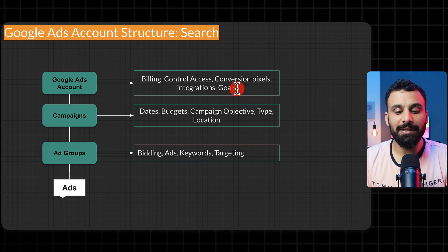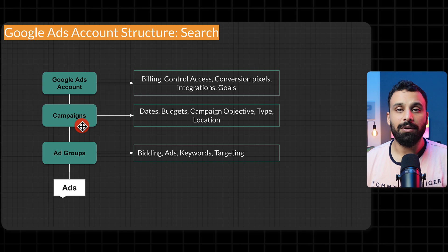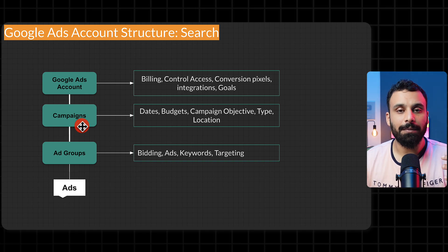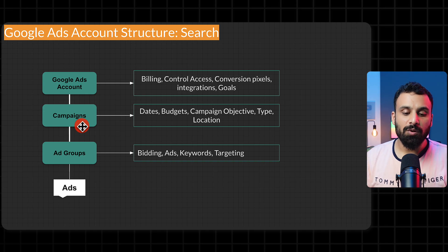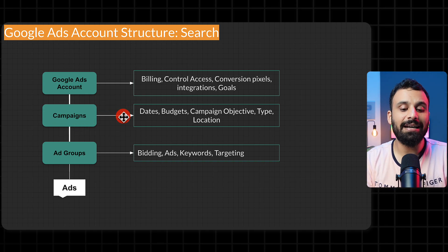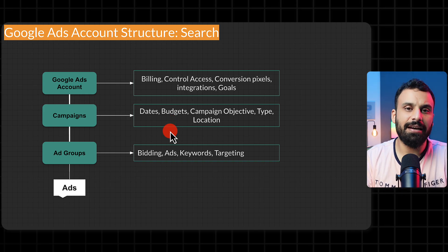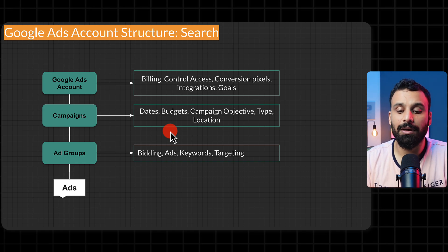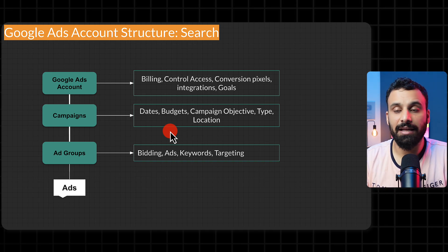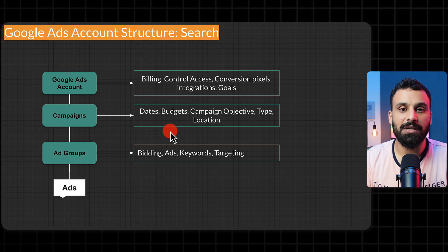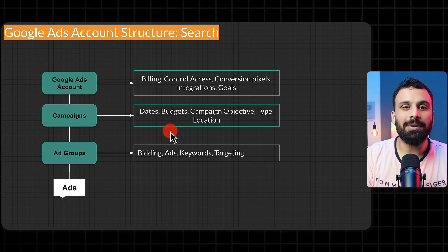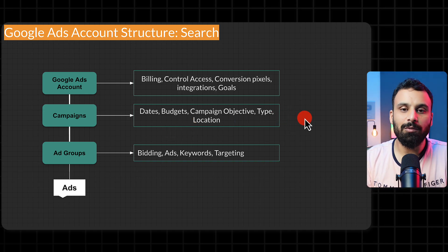At the campaign level, as the name suggests, you can have a search campaign, a video campaign, a summer campaign, a Black Friday campaign. At campaign level you control the start and end dates, how much budget you want to spend, and the campaign objective — for example, generating traffic, brand awareness about an offer, or selling a specific course or product.